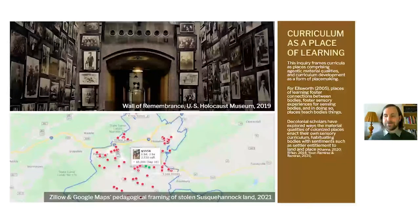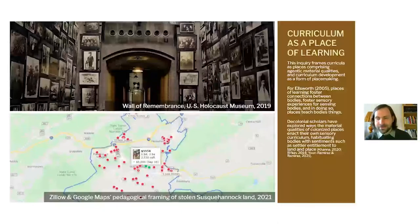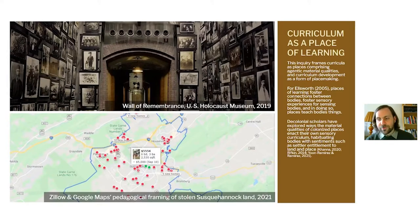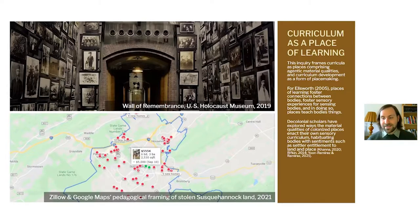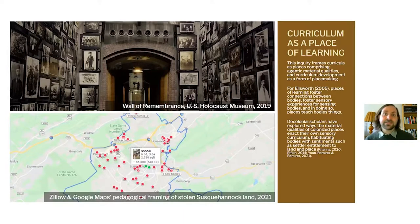The conception of curriculum in this study is as a place of learning, which frames curricula as places comprising material qualities, and curriculum development as a form of placemaking. This draws on scholar Elizabeth Ellsworth's conception of places of learning, wherein a curriculum is not a scaffold of objectives or cognitive schemas, nor a series of concepts to address, but a place featuring material invitations that can habituate sensory, bodily, and active relations to place. For Ellsworth, places of learning foster connections between bodies, foster sensory experiences for sensing bodies — and in doing so, places teach bodies things.